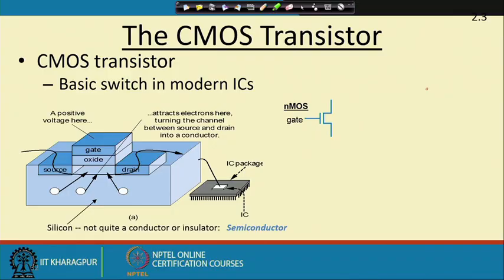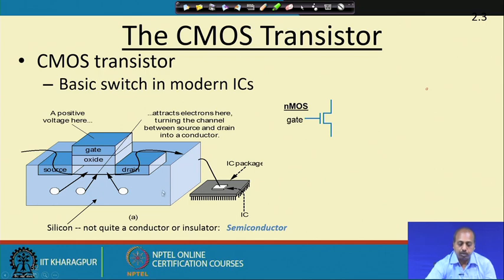One of the very basic components in digital switching and digital circuits is a transistor. The most common transistors used in the digital industry today are CMOS transistors. In a CMOS transistor, we have a semiconductor block with two dedicated regions called source and drain, which have some type of impurity diffusion. If the semiconductor block is of P-type, then on these two regions we put N-type diffusions.